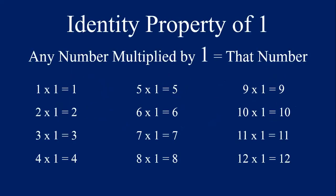Very good. Let's move on. The identity property of one says that any number multiplied by one equals that number. So let's multiply one through 12 by the number one, and you'll notice that the answers are the number we're multiplying by one.